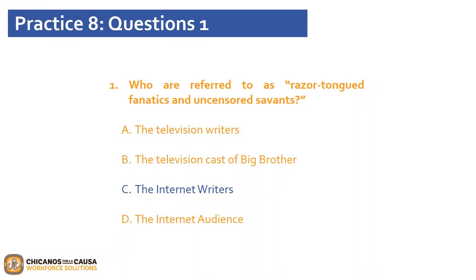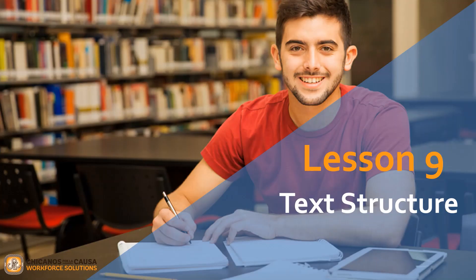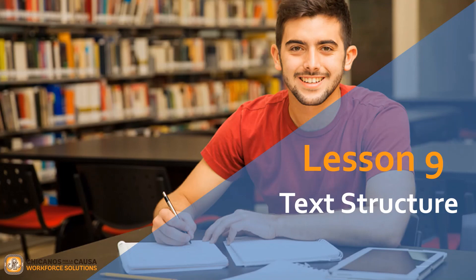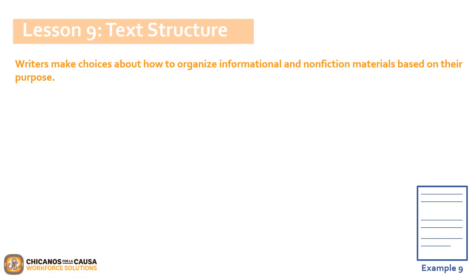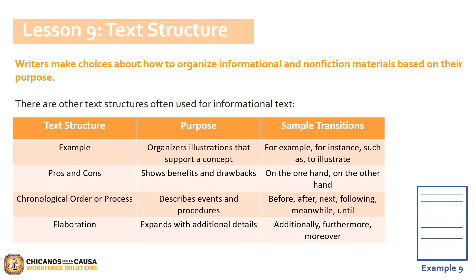Lesson 9: Text Structure. You have already seen two text structures thus far — cause and effect, and compare and contrast. But now let's take a look at a few more examples. Writers make choices about how to organize informational and nonfiction materials based on their purpose. Other text structures often used for informational text include examples, pros and cons, chronological order or process, and elaboration. If we look at pros and cons as a text structure, its purpose is to show benefits and drawbacks — directly comparing two different items. Sample transitions include 'on the one hand' or 'on the other hand.' Elaboration is another text structure meant to expand things with additional details, with transitions such as 'additionally,' 'furthermore,' and 'moreover.'